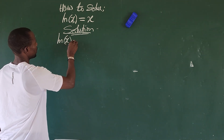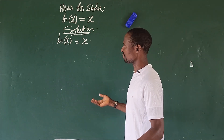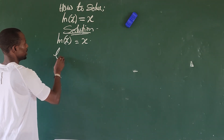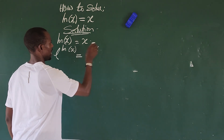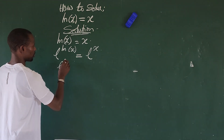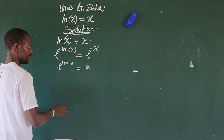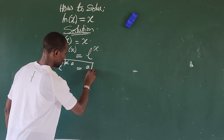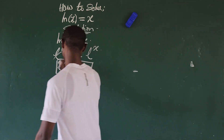We have ln(x) = x. To get x here, we need to introduce e to the system. So we raise both sides: e to the power of ln(x) equals e to the power of x. We know the law which says that e to the power of ln(a) equals a, because this is ln base e, so it leaves the system to give us just a.